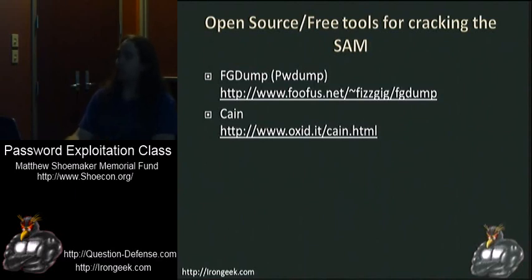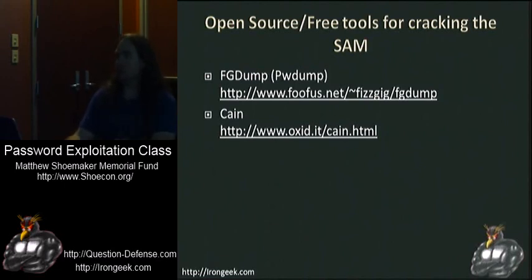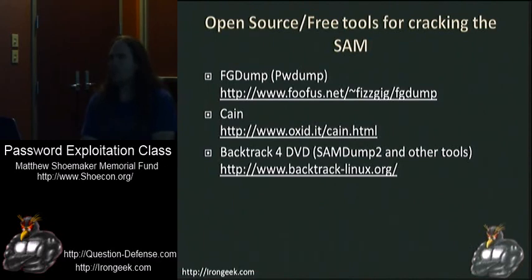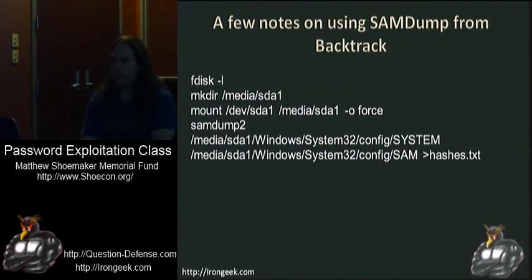Cain is really good for dumping SAM files. There are a bunch of other tools as well — SAMdump2, which you saw earlier, where we pointed it to both the SAM and the system file. That output is in PWDump format. FGDump is like a current version of that from the Fufus group. Backtrack DVD has that SAMdump tool on it. Here's a series of commands you'd use in Backtrack to dump the SAM — no need to write these down, the slides will be out there.